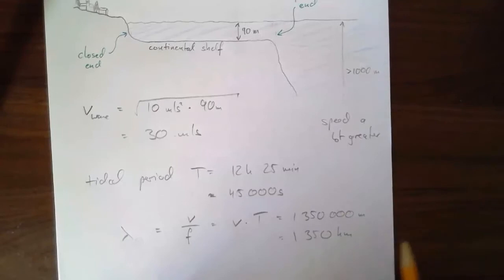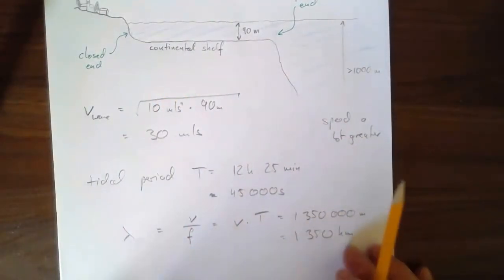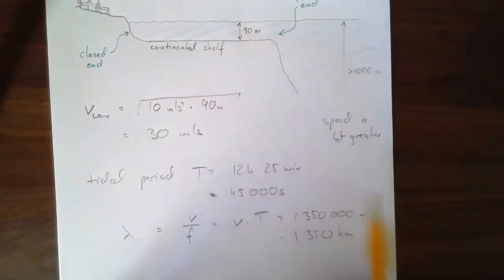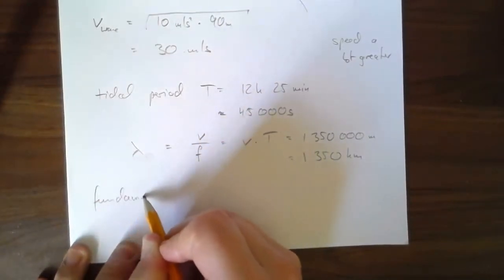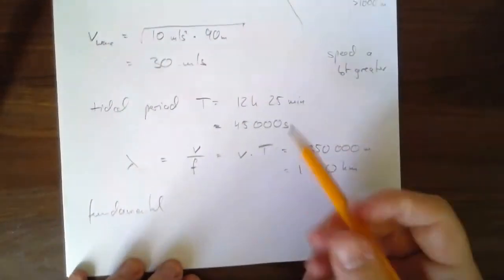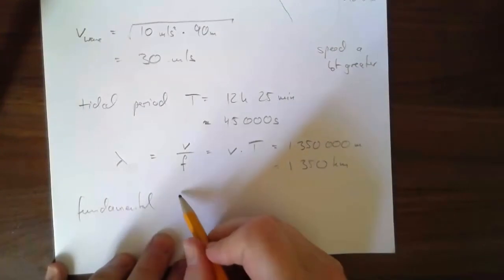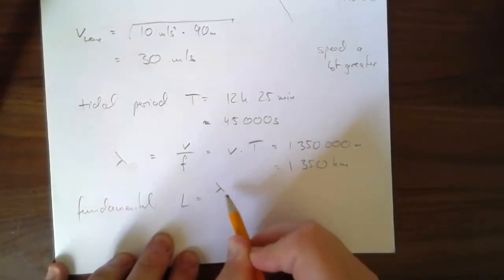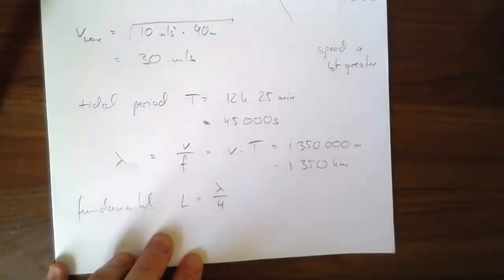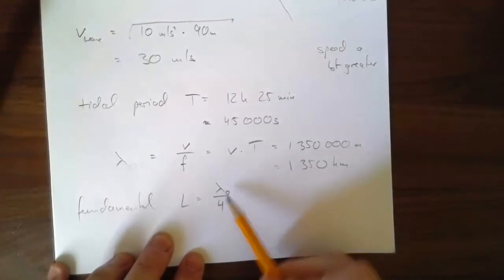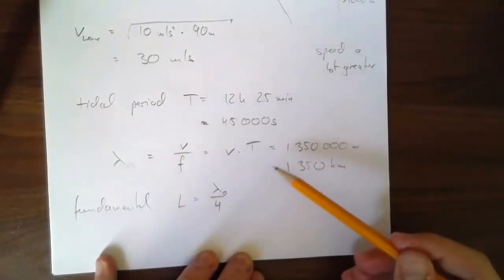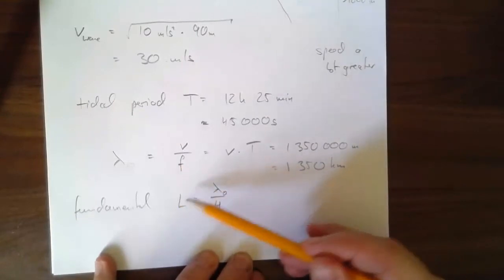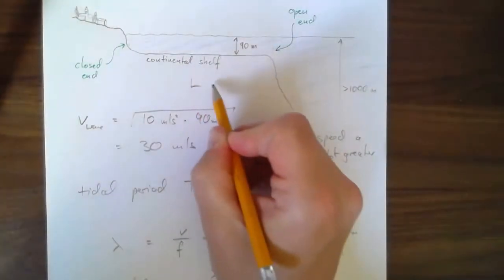So how long would the continental shelf have to be to allow for the creation of standing waves? Well, the fundamental for a closed-open tube, or closed-open interval along which the wave travels, is given by the wavelength divided by 4. So this is the relationship between the fundamental and L. So if this is my wavelength, those are the waves that exist, then under what condition do they form the fundamental of this shelf?